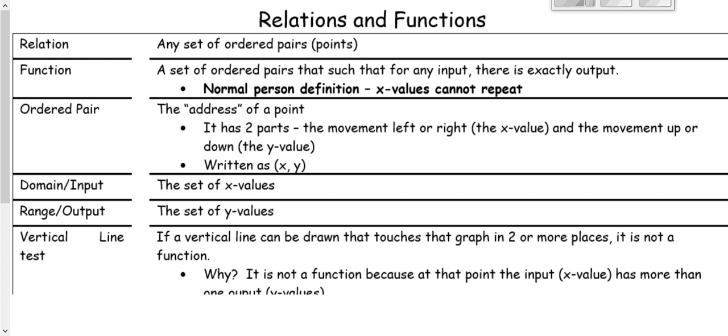In this lesson we're going to talk about relations and functions and how to determine if a relation is a function. A relation is any set of ordered pairs or points. This includes if you're given ordered pairs, something graphed on a coordinate grid, or an equation with an input and output that can create a set of ordered pairs — all of those are relations.